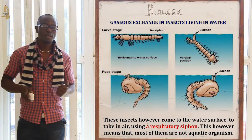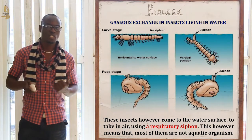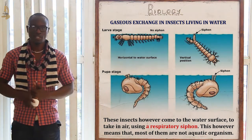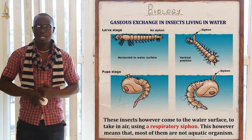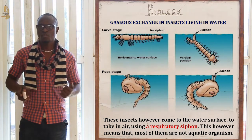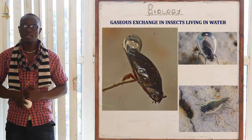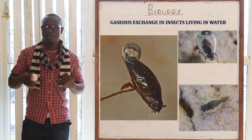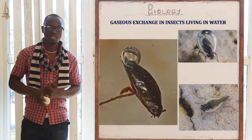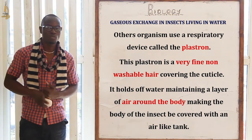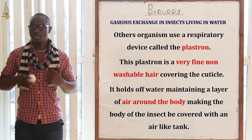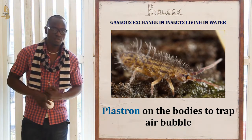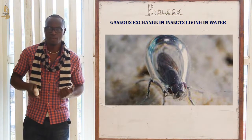The siphon opens when the larva comes to the surface to take in air, and is immediately closed by a valve when the larva is submerged in water. Some water insects like the water beetle and water bugs use air bubbles trapped by hairs on their bodies for gas exchange, giving them a silvery appearance. Others use respiratory devices called the plastron, a fine non-wettable layer that covers the cuticle and maintains a layer of air around the body.